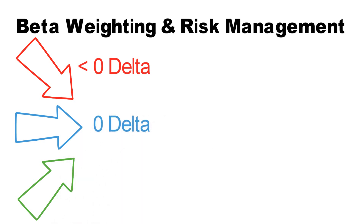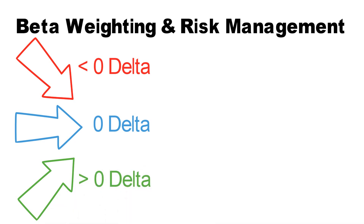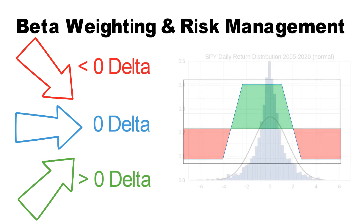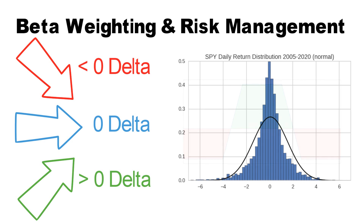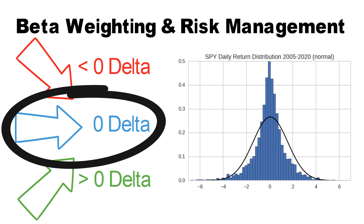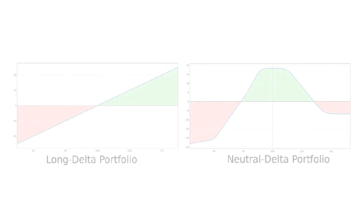A delta neutral position is one with a delta somewhere around zero — such a position is not significantly affected by changes in the underlying price. An iron condor would be an example of a delta neutral option strategy; it achieves max profit if the price of the underlying stays right where it is. Think about it: the vast majority of days, SPY does not change by more than $1, so why would you construct a highly directional portfolio if you can just stay neutral or slightly directional?